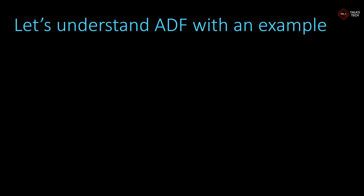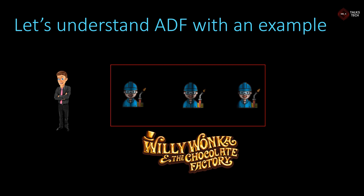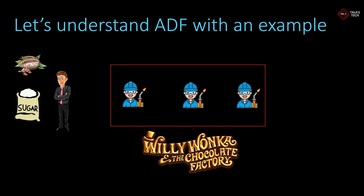Let's understand this with an example. Consider a chocolate factory. In this chocolate factory, there is a manager and there are three workers. The manager has many contacts — there are many dealers. One dealer supplies cocoa seeds, one dealer supplies sugar, and one dealer supplies milk. So the manager deals with three dealers providing three raw material products.